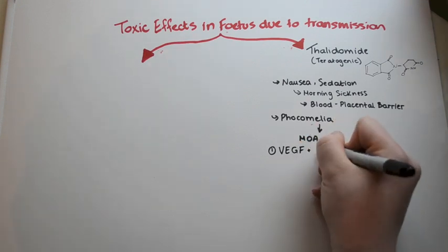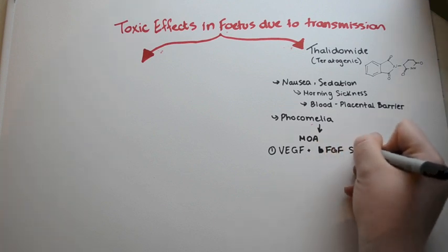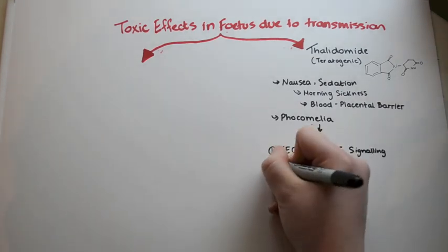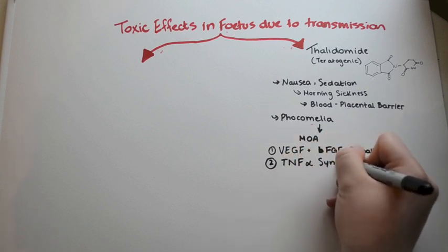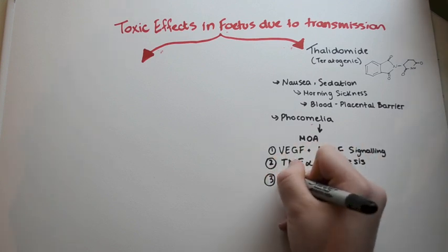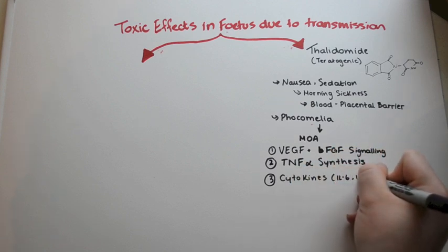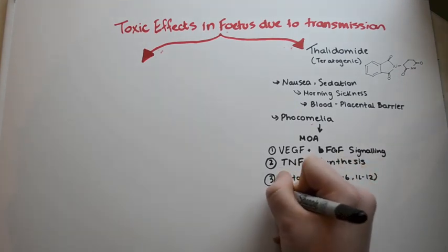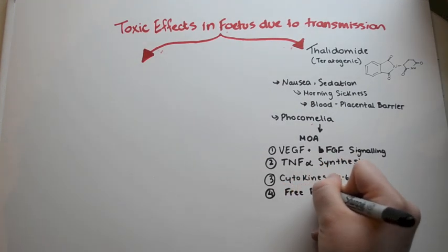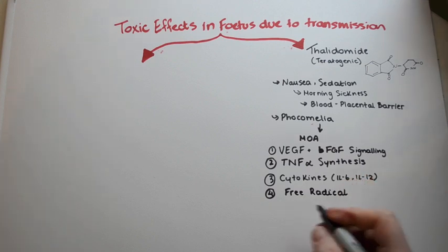There are many proposed mechanisms of action by which Thalidomide is teratogenic. The first is interruption of the vascular endothelial growth factor and fibroblast growth factor, the basic form, signaling. Another is inhibition of tumor necrosis factor alpha synthesis by tumor necrosis factor alpha mRNA breakdown. The reduction in cytokines such as IL-6 and IL-12 also causes a reduction in free radical count, leading to oxidative nucleic acid damage due to the effects of reactive oxygen species.